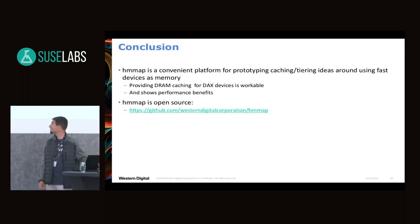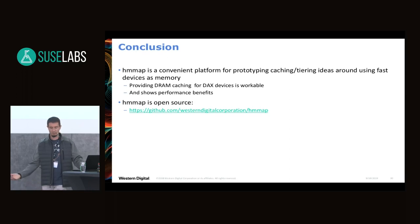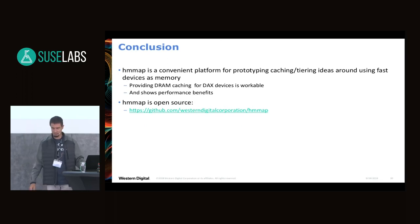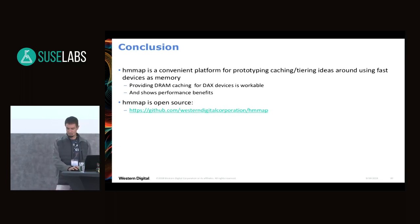To conclude: HMMap is a convenient platform for prototyping and experimenting with caching and tiering ideas for using fast devices as memory. A main experiment has been providing DRAM caching for devices capable of DAX. We've shown it's a workable idea and that there are performance benefits even for devices slower than what most would assume for a DAX device. HMMap is open source — the code is on GitHub. Please contact us if you're interested.